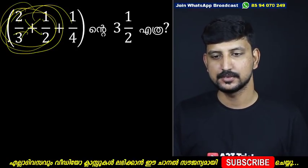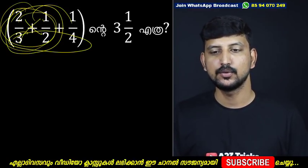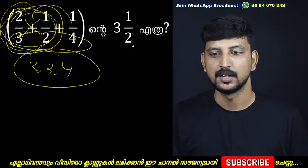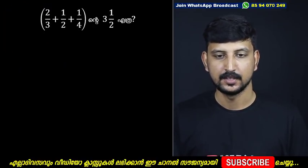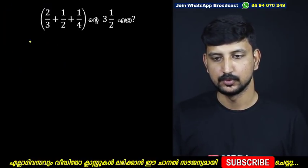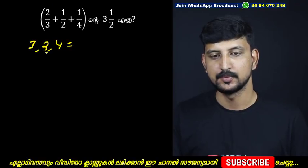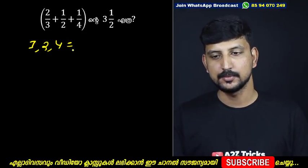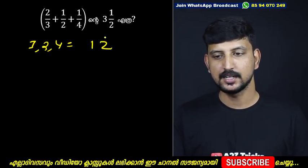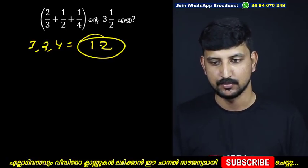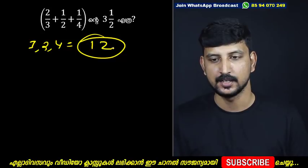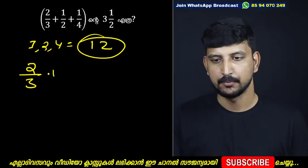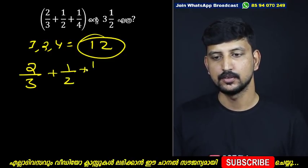Now let's do this again. These two use the LCM now. Let's find the LCM of 3, 2, and 4. How do you change that? The LCM of 3, 2, and 4 — if you have 4x, you can see the LCM. So 2 by 3, plus 1 by 2, plus 1 by 4, using LCM 12.